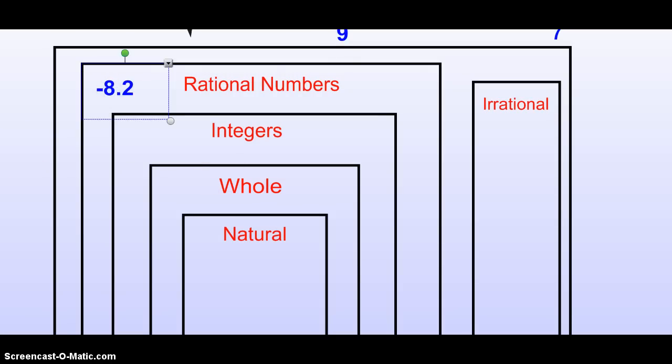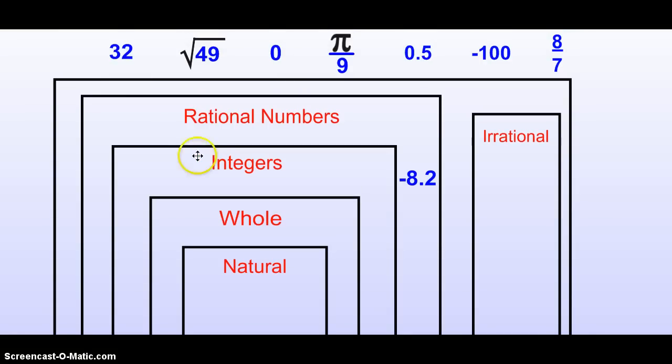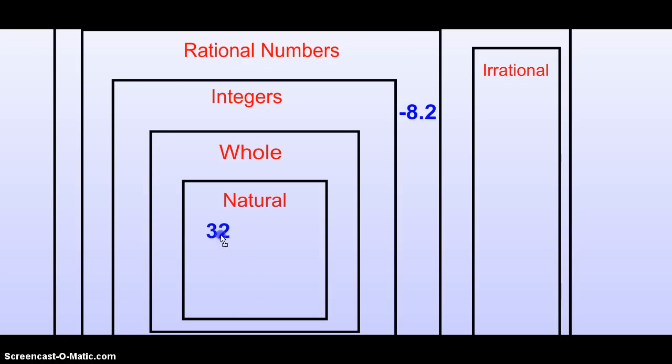So, go ahead and put this somewhere on the rational numbers box where you have space that you didn't write the notes on earlier. Let's go here to number 32. Let's start at the smallest. Would negative 32 be a natural number?